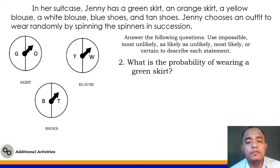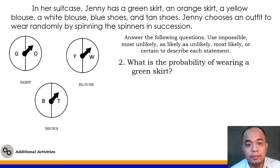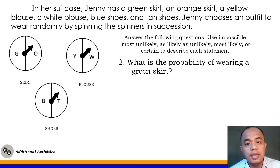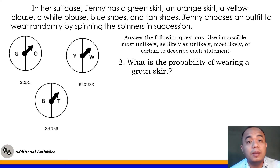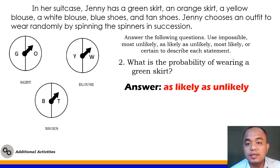Number 2: What is the probability of wearing a green skirt? Jenny has two skirts — green and orange. So the probability of choosing a green skirt is 1 out of 2, or one-half. There is a 50% chance of picking the green skirt, so the correct answer is as likely as unlikely.